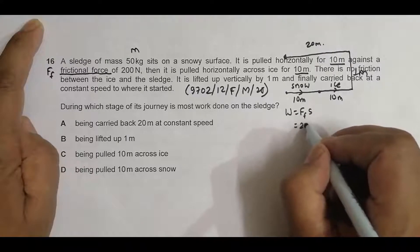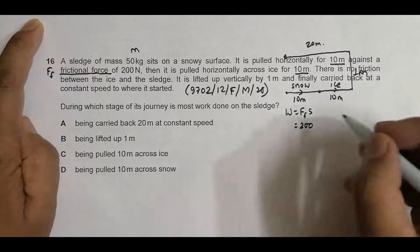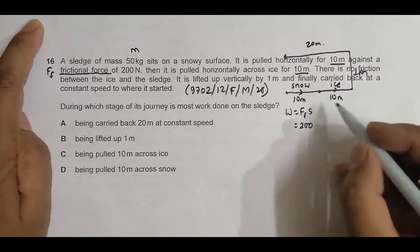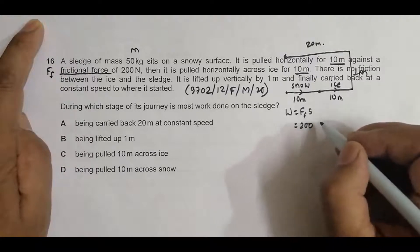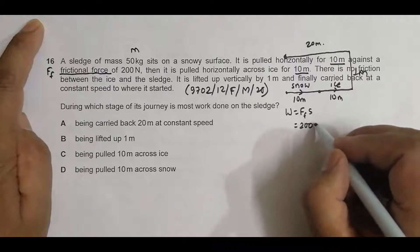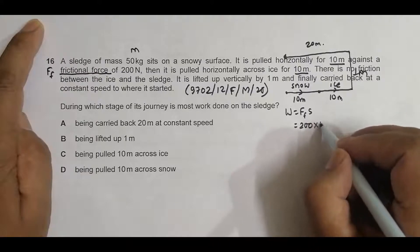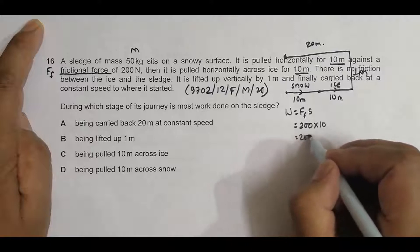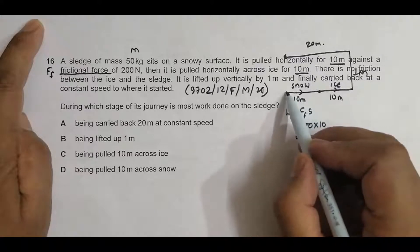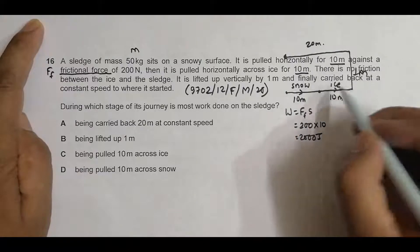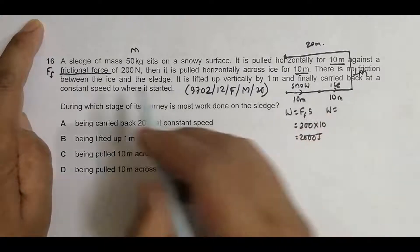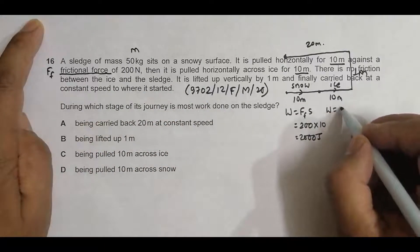The frictional force is 200 Newtons and the displacement S is 10 meters, so it equals 2000 Joules. That is the work done across the snow. Then across ice, there is no friction, so work equals zero times S, which equals zero.